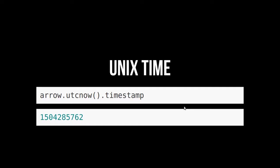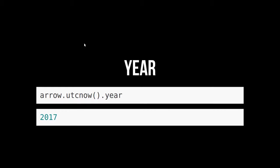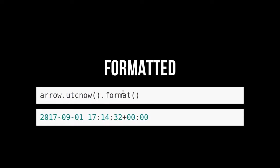There are many ways to format time. You've got Unix time — if you call that function on the object it returns, you get the Unix timestamp, which is the number of seconds since a certain date. We can also access the year, month, and day directly. And if we want something a little more formatted, we just call .format() as a function, and it will give you something a little more readable.